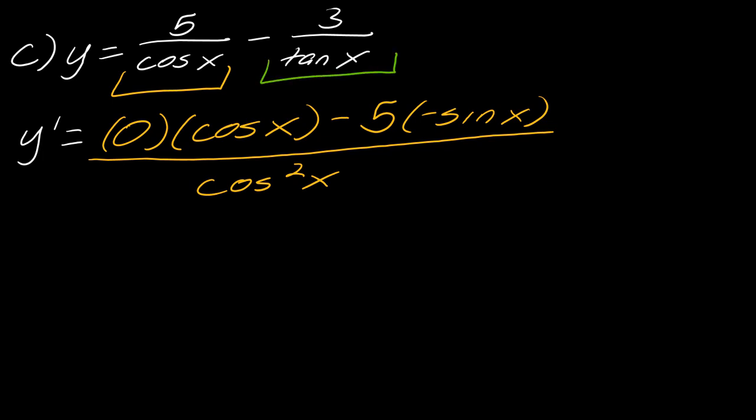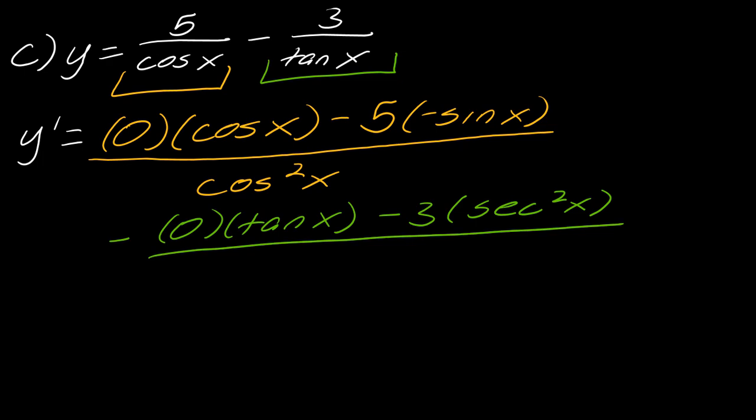And now to work on the second derivative, which I'll do in green. So the derivative of the top is going to be zero. And then I leave the tangent function alone. Now I subtract that off, so I leave the three alone now. And the derivative of tangent is secant squared x. And then I divide all of that by tangent squared x.